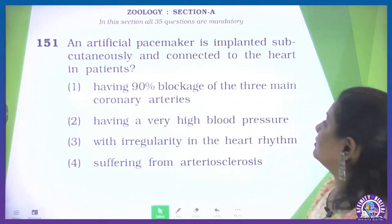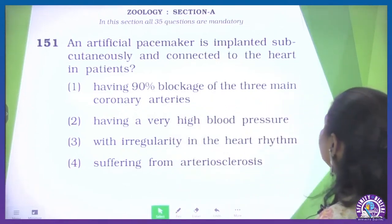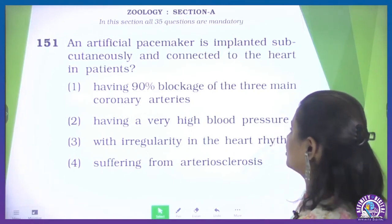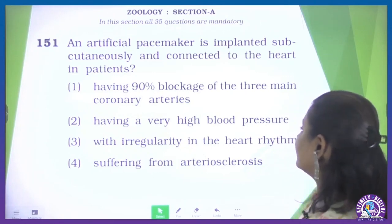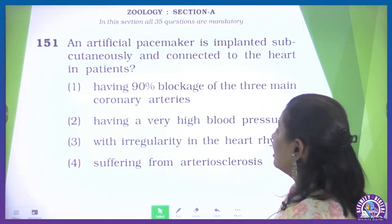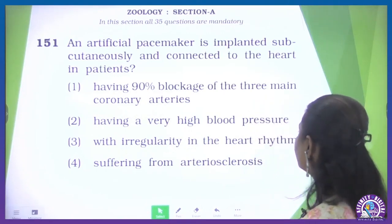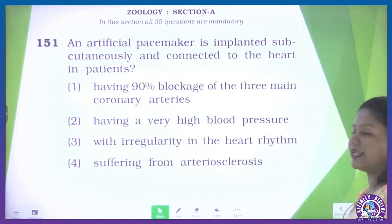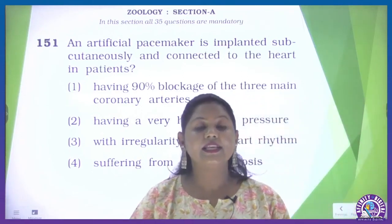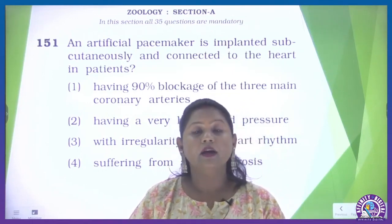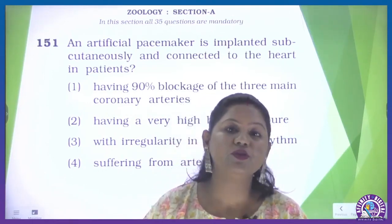First question: an artificial pacemaker is implanted subcutaneously and connected to the heart in a patient. The options given are: having 90% blockage of the three main coronary arteries, having high blood pressure, with irregularity in heart rhythm, and suffering from arteriosclerosis. In this case, when the heart is blocked, we don't use the pacemaker.